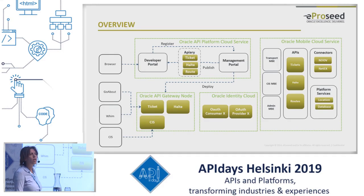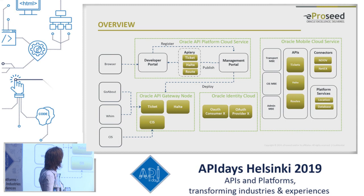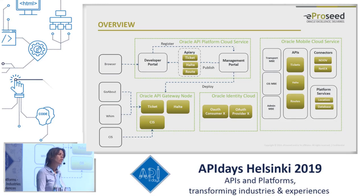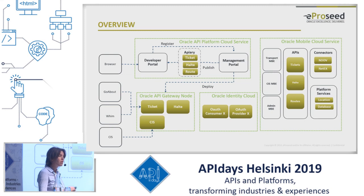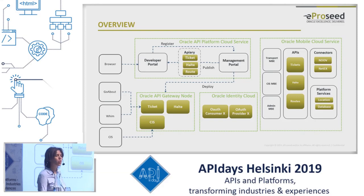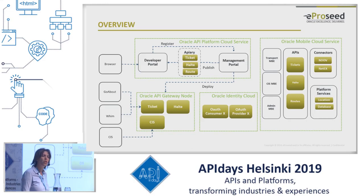We designed the APIs in Apiary — you can do Swagger or API Blueprint there. We have three APIs, as mentioned. There's also a management portal where you put security on your APIs, publish them, accept subscribers, view analytics, and manage everything you want to do with your API. Once you've tested it well, you deploy it to the gateway node and it can be used.